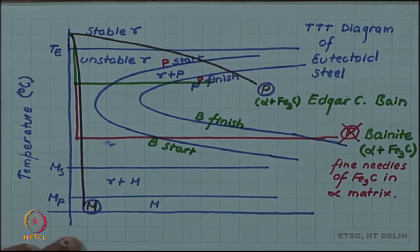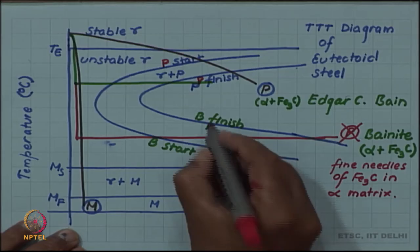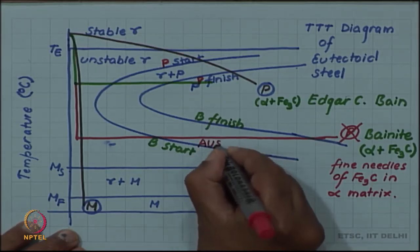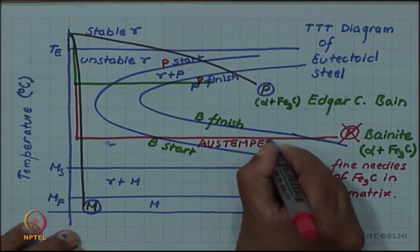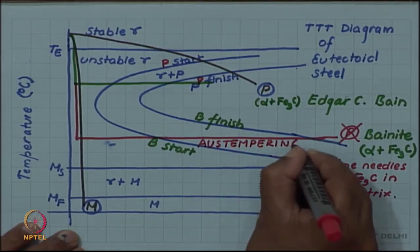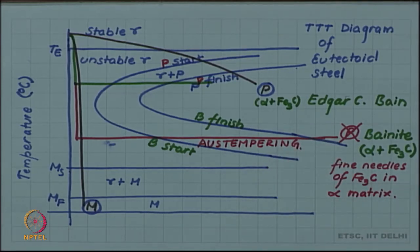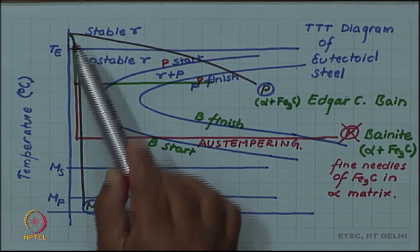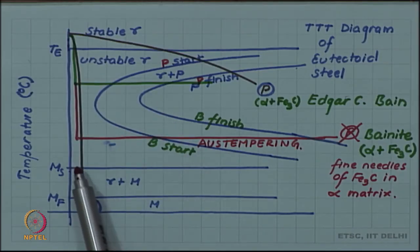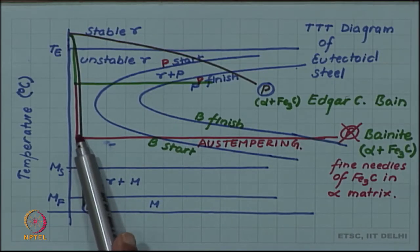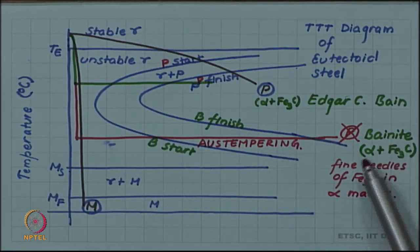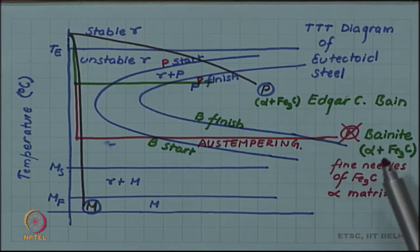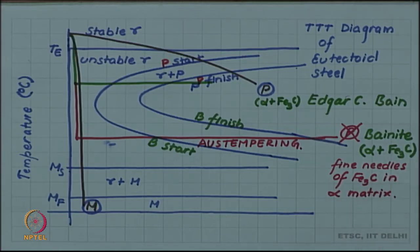This heat treatment is named austempering. It is used for some steels. Austempering happens when austenite is quenched below the nose of the C curve but above Ms, and then that austenite is allowed to transform. The transformed product is alpha plus Fe3C, but it is not pearlite — it is bainite — because of the different distribution of Fe3C and alpha.